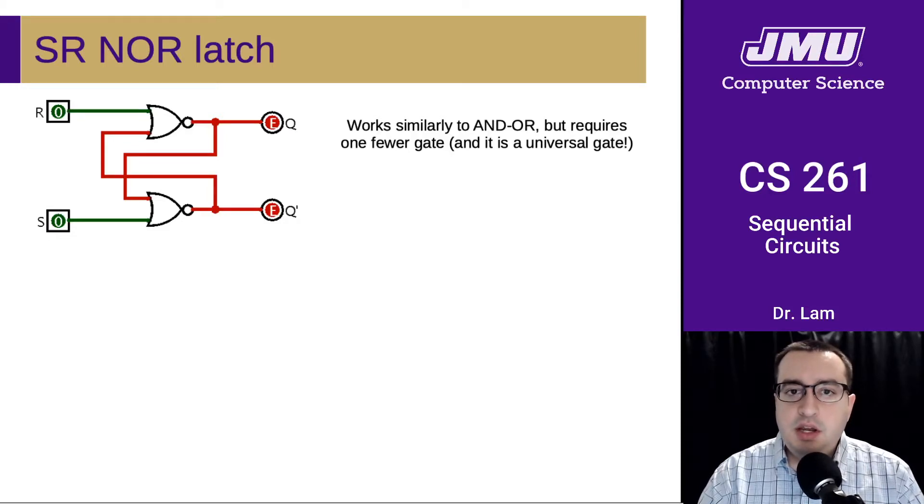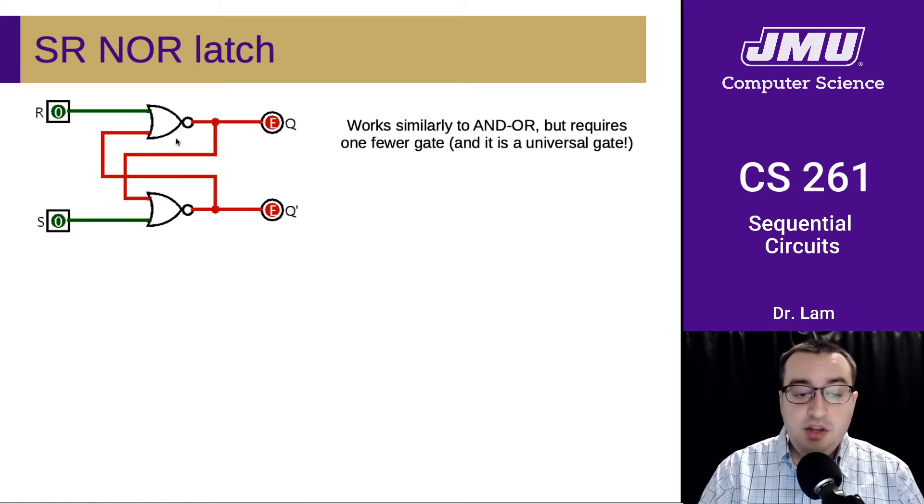Here is an SR NOR latch, and it functions very similar to the one we just saw, but it's built a little differently. It uses one fewer gate, and the gate it does use is the NOR gate, the NOT of the OR, which is actually kind of nice because this is one of our universal gates. That means we could potentially build all of our memory using the exact same gate.